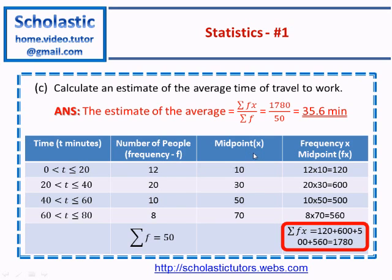Therefore, the average value of this data set is sigma fx divided by sigma f, which is 1780 divided by 50, equals 35.6 minutes.